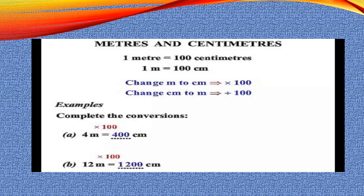Let us see some examples. Four meters is given and you have to change it into centimeters. Because meter is bigger than centimeter, you will multiply four by one hundred — since one meter equals one hundred centimeters. So four multiplied by one hundred gives four hundred centimeters. That means four meters equals four hundred centimeters. Similarly, twelve meters — again multiply by one hundred — it becomes twelve hundred centimeters.